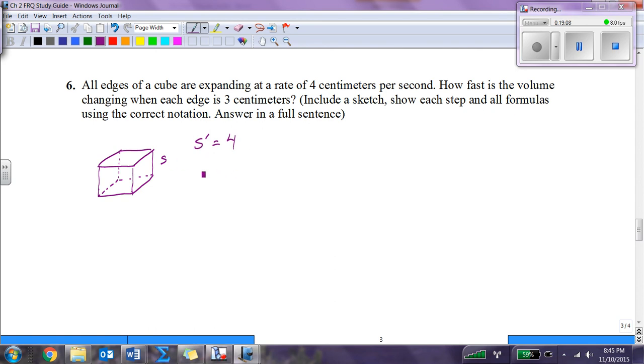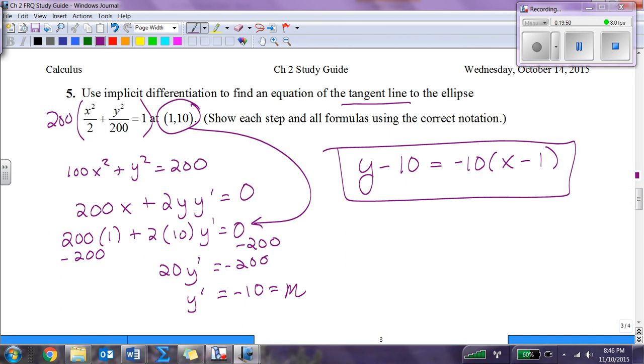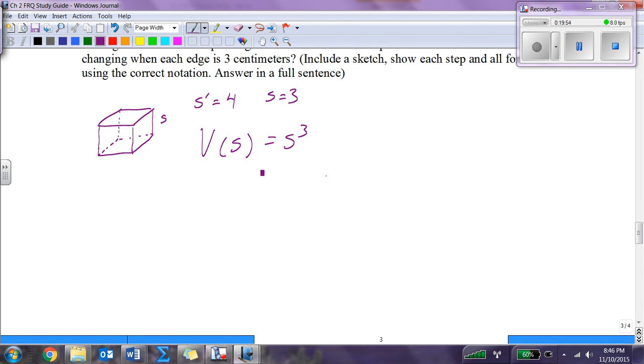How fast is the volume changing when each edge is 3? So S is 3. The volume in terms of S is S cubed. Volume of a cube is the area of the base times the height of any rectangular prism. What I want is V prime of S equals 3 S squared. So 3 S squared S prime.